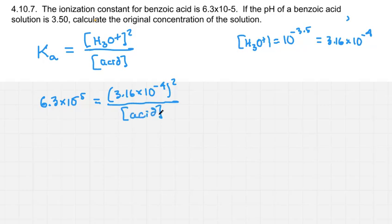the concentration of the acid, and we're trying to solve for the acid concentration unsurprisingly. If we square this number here, we get 1 times 10 to the minus 7. So I'm going to write that. That's a little bit quicker.